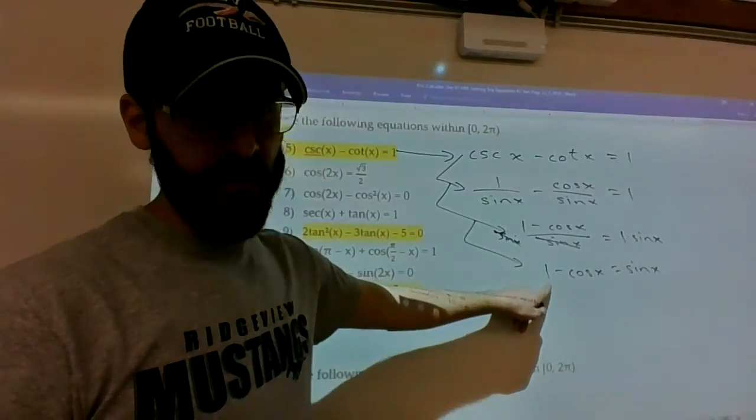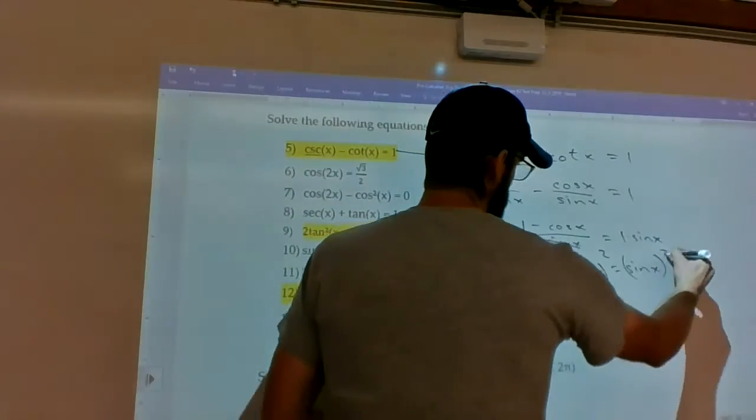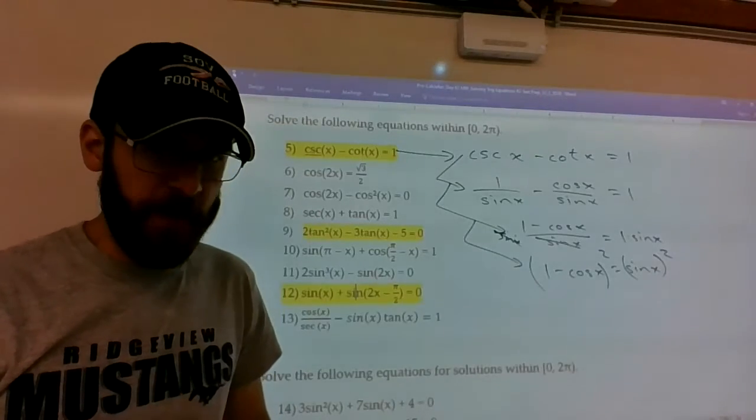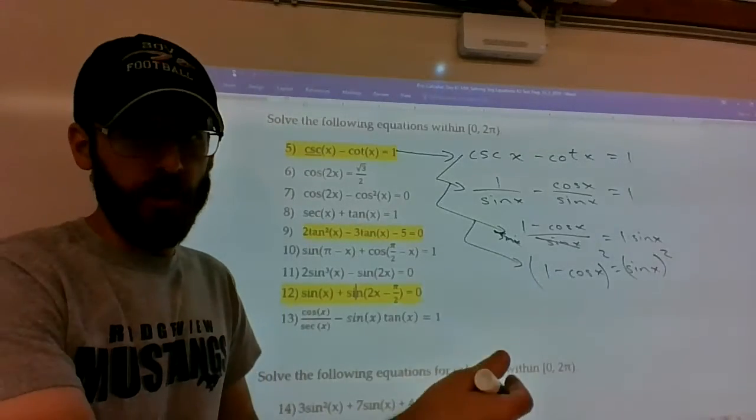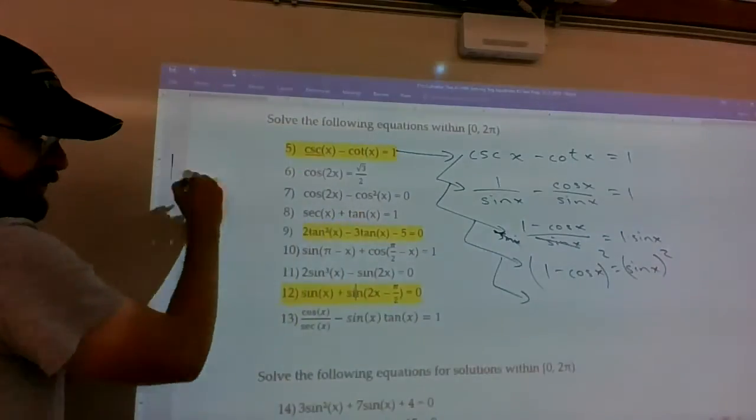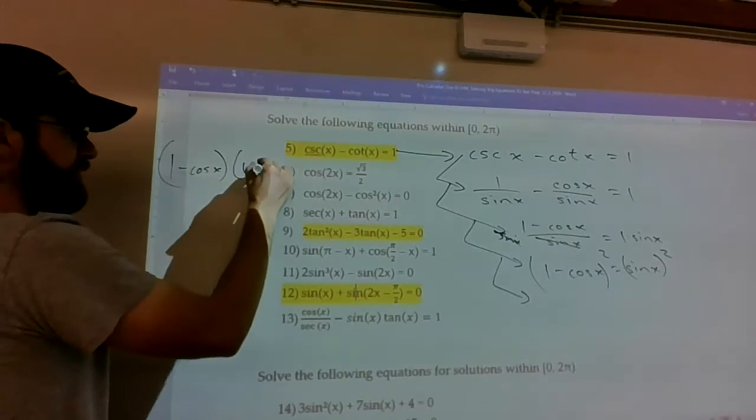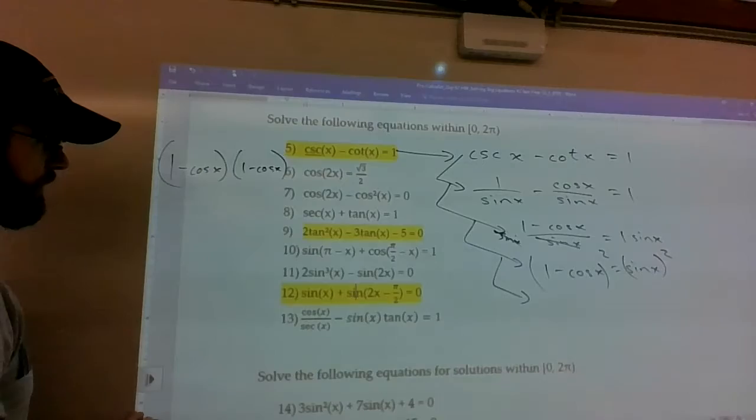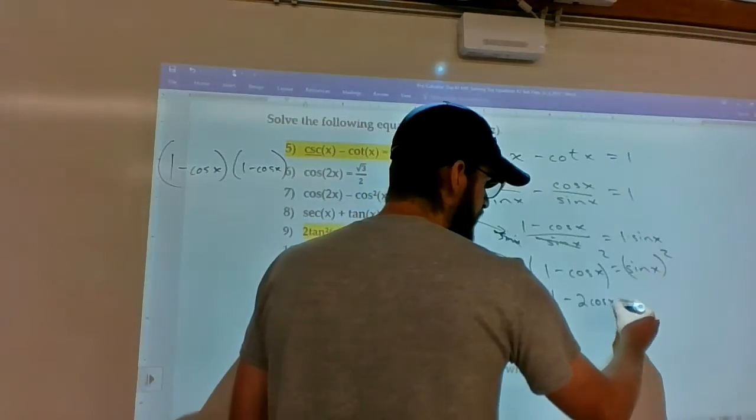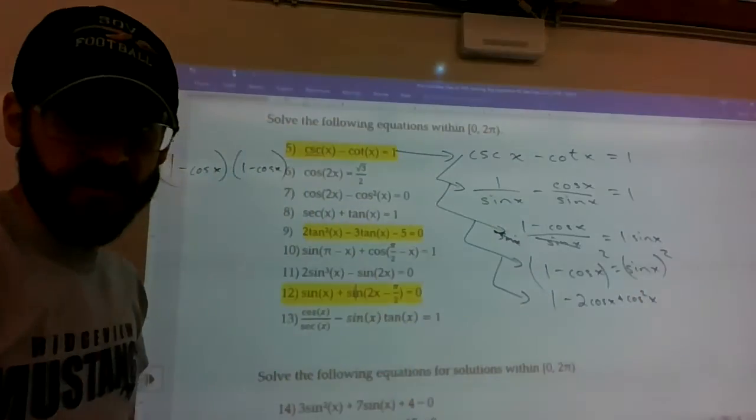When you get to this point, there's only really one thing you can do to kind of move forward. You can square both sides. Squaring both sides is a legitimate strategy because it creates Pythagorean identities which may move you closer towards solving this thing. Make sure you don't just call this 1 - cos². It's actually (1 - cos x)(1 - cos x). When you expand that whole thing out, you end up getting 1 - 2cos x + cos² x on the left hand side, sin² x on the right hand side.